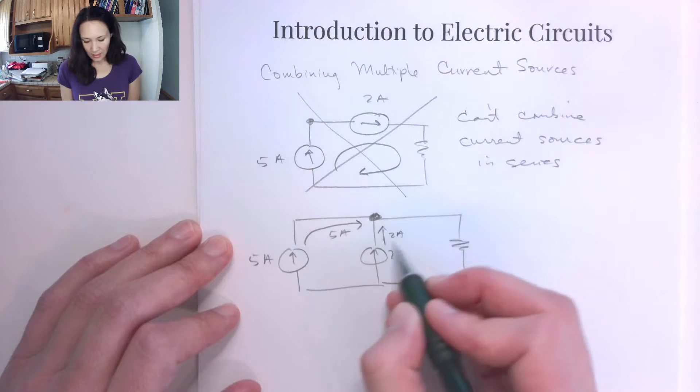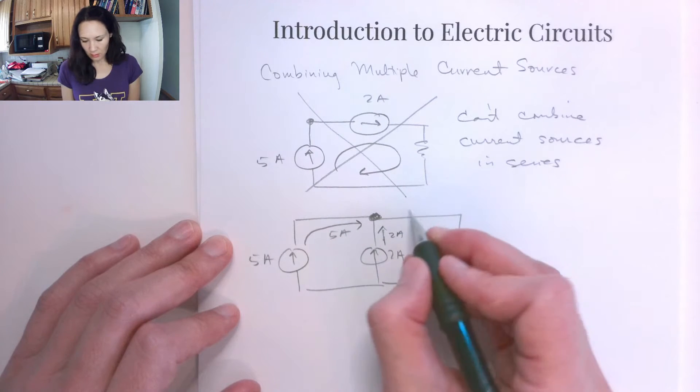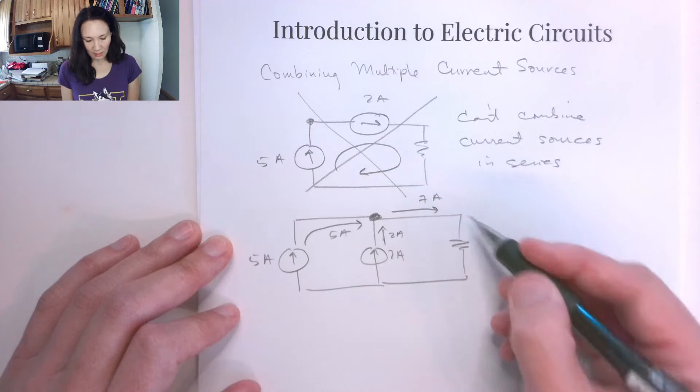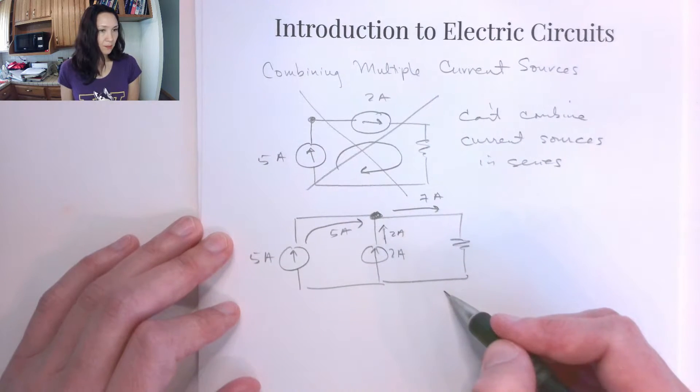Due to KCL, they're going to meet at this node here, combine to deliver 7 amps to this load resistor here. So as long as the current sources are in parallel,